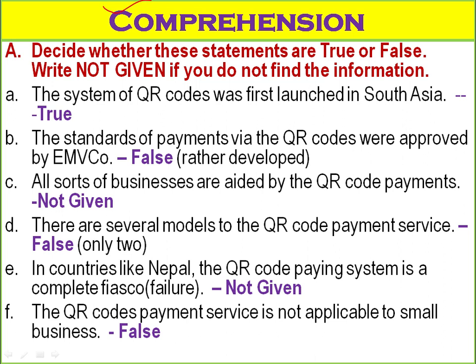Comprehension exercise — decide whether these statements are true, false, or not given. A: The system of QR codes was first launched in South Asia — False, it was invented in Japan. B: The standard of payment via QR codes was approved by EMVCO — False, it was developed by EMVCO. C: All sorts of businesses are aided by QR code payment — Not Given. D: There are several models of QR code payment services — False, there are only two. E: In countries like Nepal, the QR code payment system is a complete fiasco — Not Given. F: QR code payment services are not applicable to small businesses — False.